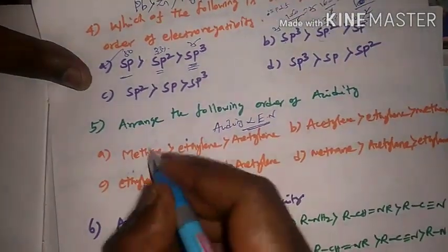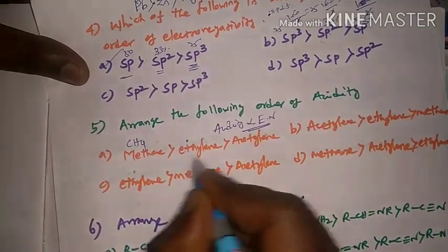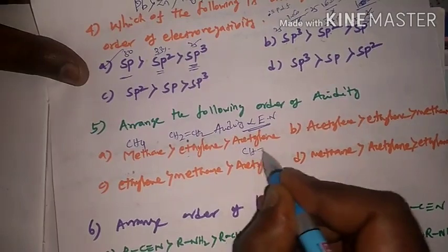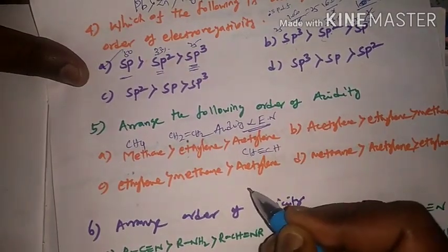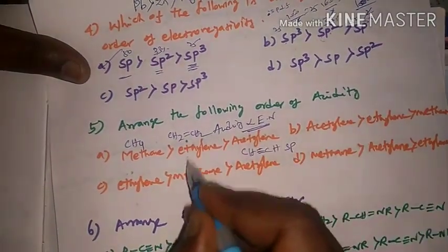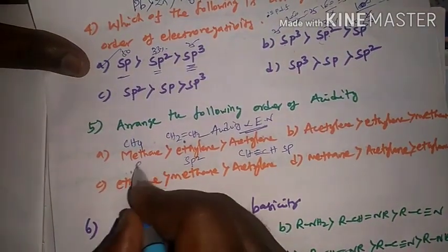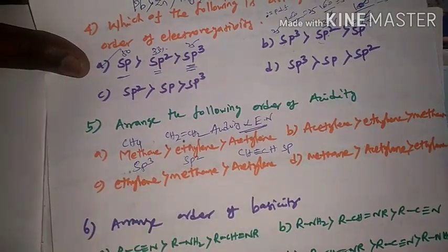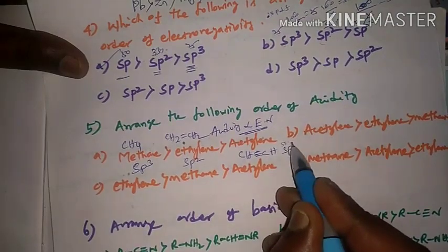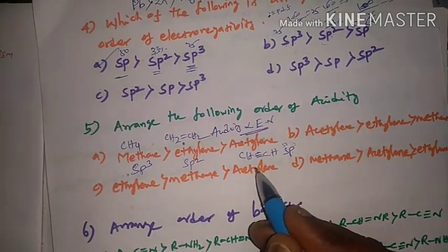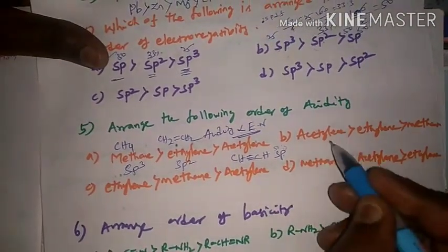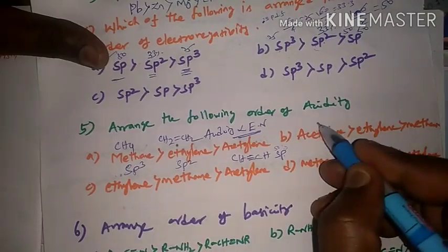Methane is CH4 (sp3), ethylene is CH2=CH2 (sp2), and acetylene is CH≡CH (sp). For a triple bond (sp), the s-character is 50%. So acetylene has the highest s-character, followed by ethylene, then methane.